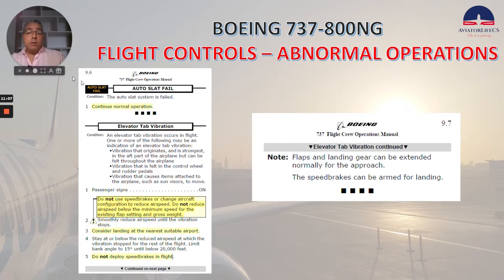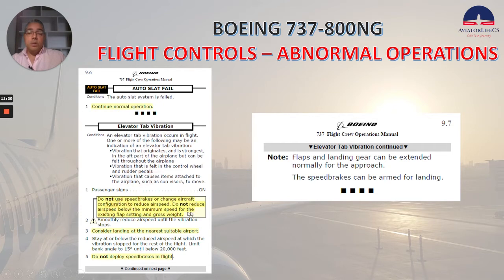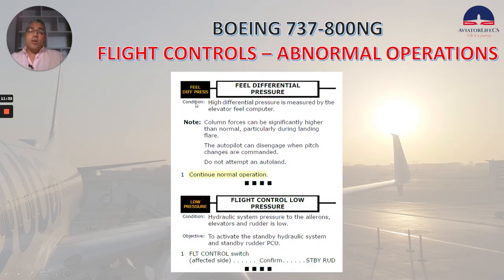Auto slat fail: the checklist says continue normal operation. Elevator tab vibration: do not use speed brakes or change aircraft configuration to reduce airspeed. Do not reduce airspeed below the minimum speed for the existing flap setting and gross weight. Consider landing at the nearest suitable airport. Do not deploy speed brakes in flight. Feel differential pressure: continue normal operation. Low pressure for the flight controls: flight control switch — affect the site, confirm standby rudder.